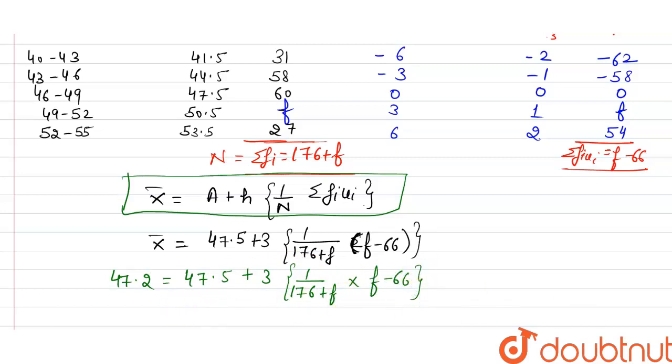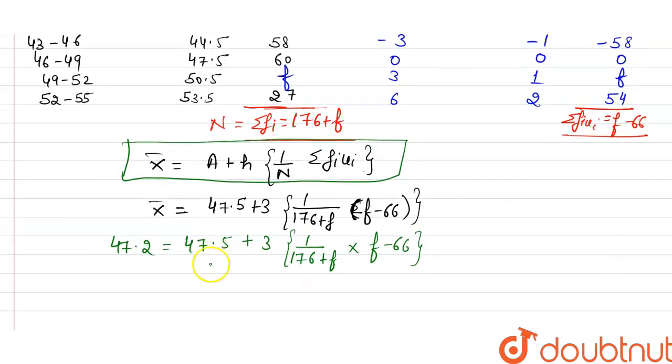Now after solving this we get: minus 0.3 is equal to 3 multiply f minus 66 upon 176 plus f. And that gives minus 1 divided by 10 is equal to f minus 66 upon 176 plus f.